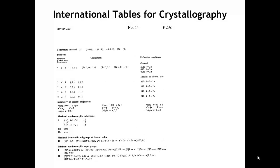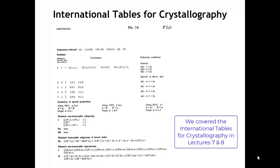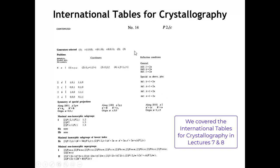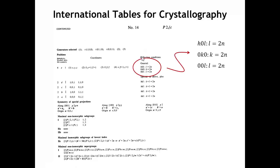Going back to some of the early lectures where we were talking about space group symmetry and the International Tables, there was a feature in the International Tables that I kind of glossed over, which is the reflection conditions. Here we have a page from space group 14, the monoclinic space group P 2₁/c, and we see that the reflection conditions are given here. If we blow those up a little bit, what it says is H0L with L equal to 2N, 0K0 with K equal to 2N, and 00L with L equal to 2N.